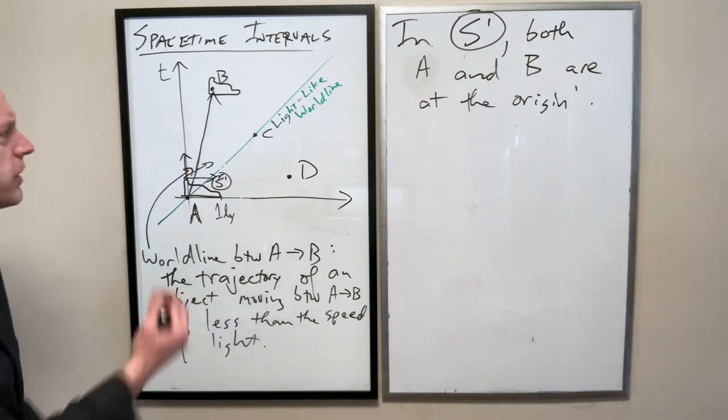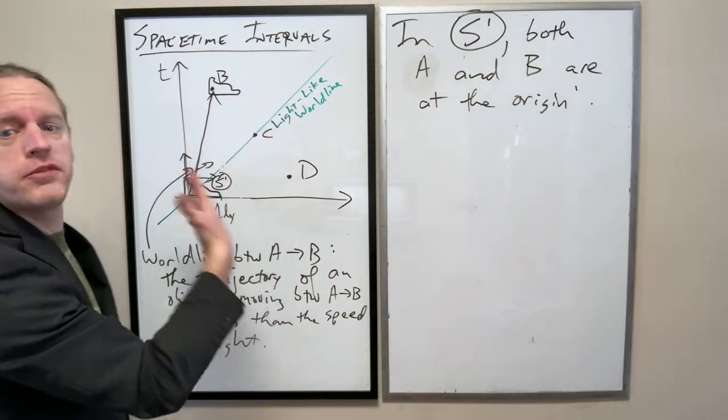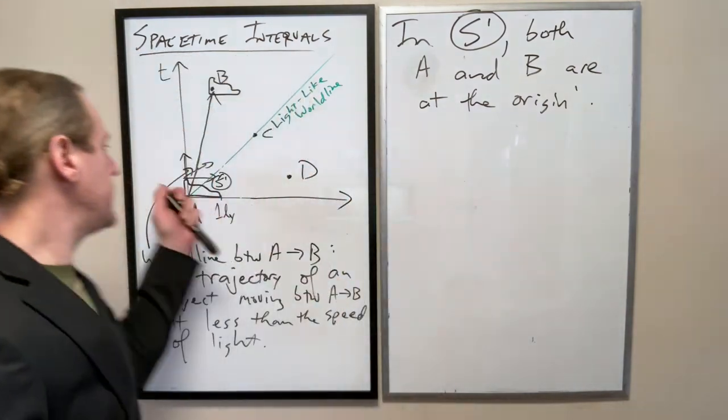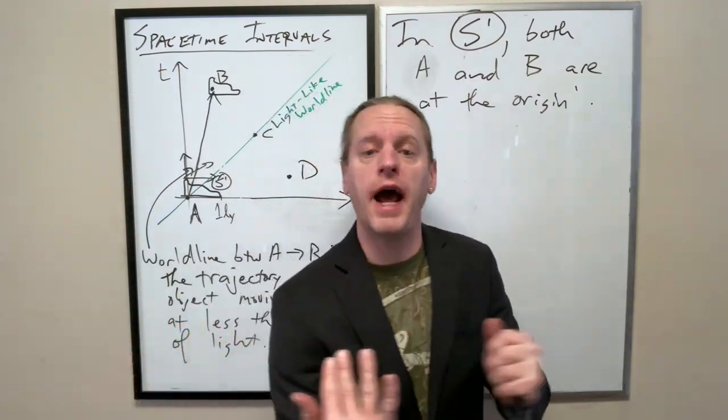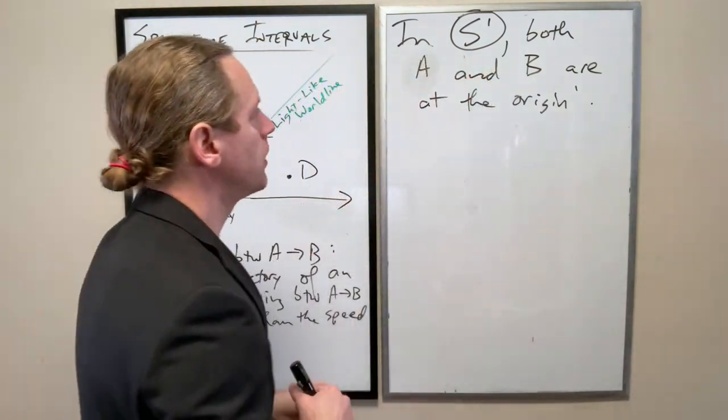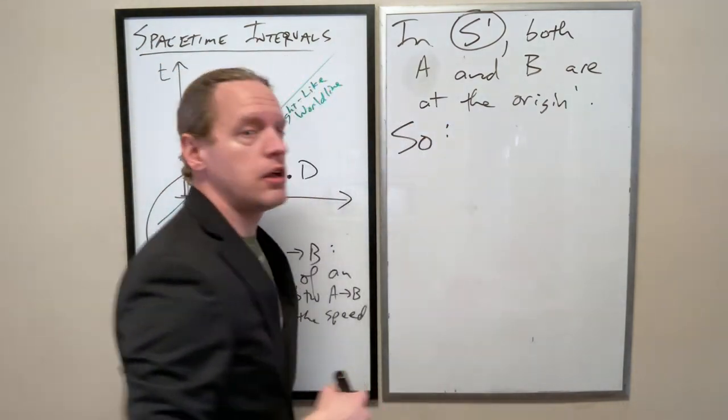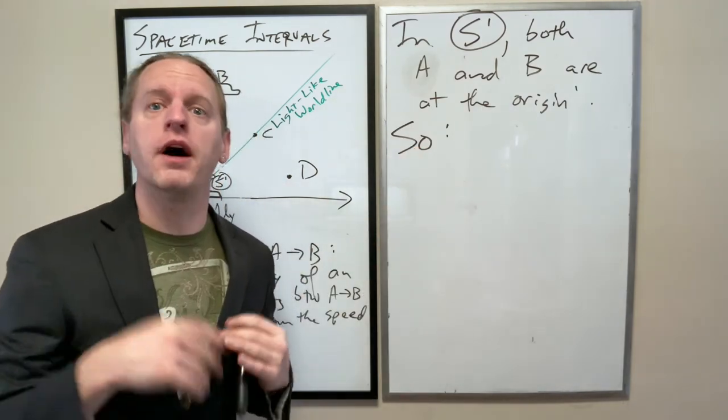And you can always, as long as you're within the future light cone, you can always find some speed to move so that those two events, A and any other event B, both occur at exactly the origin if you're moving at the proper speed. And that's really important because in that case, no space elapses between events A and B.